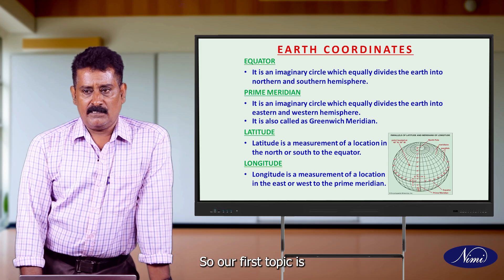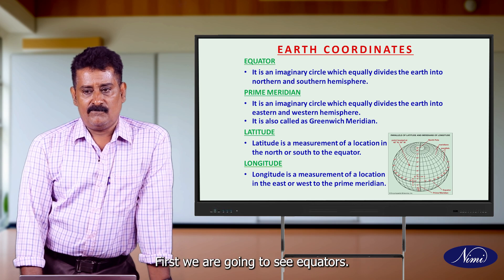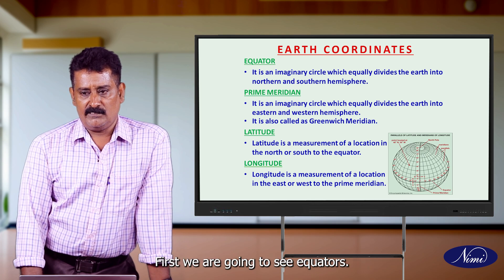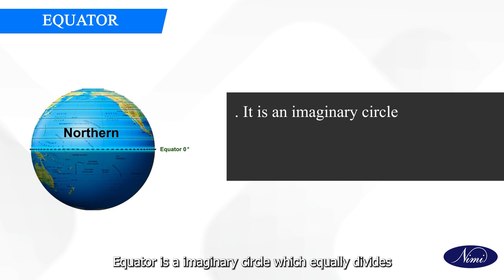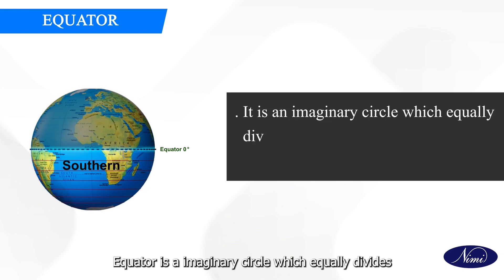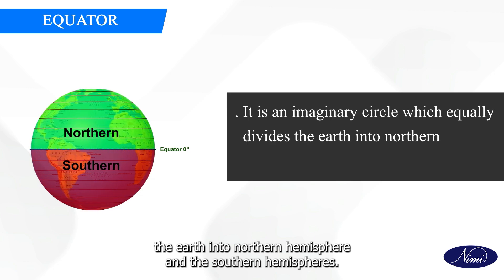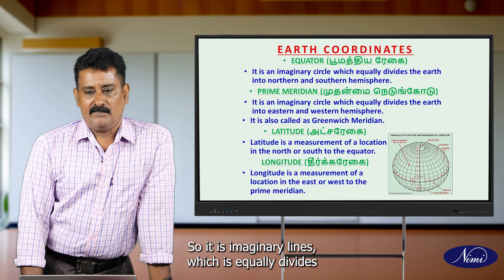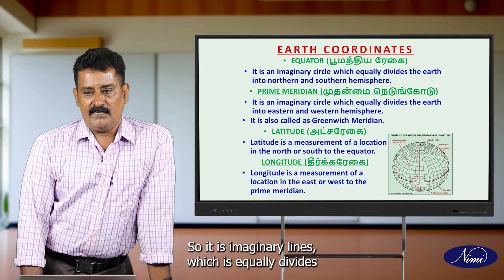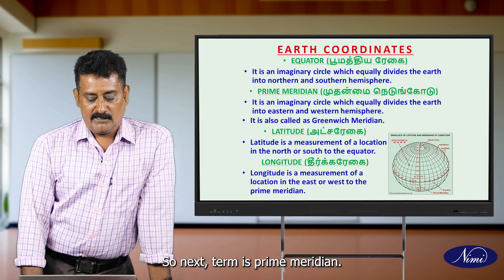Our first topic is earth coordinates. In earth coordinates, first we are going to see the equator. What is the equator? The equator is an imaginary circle which equally divides the earth into the northern hemisphere and southern hemisphere.